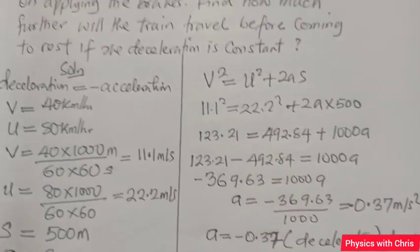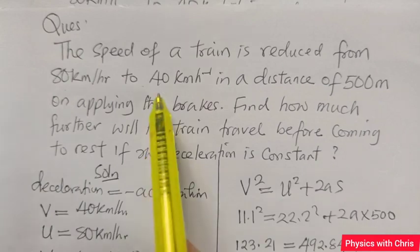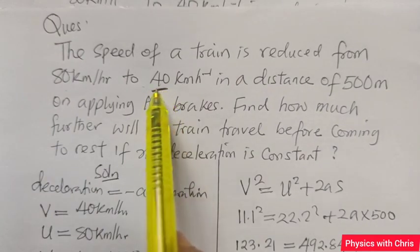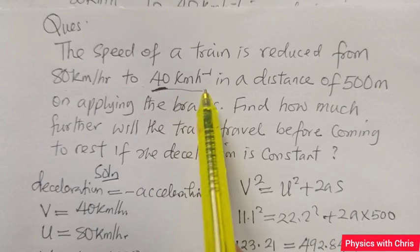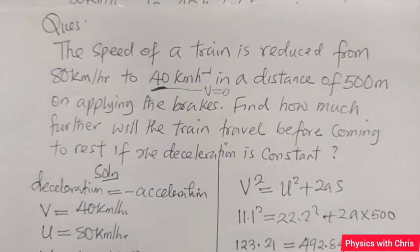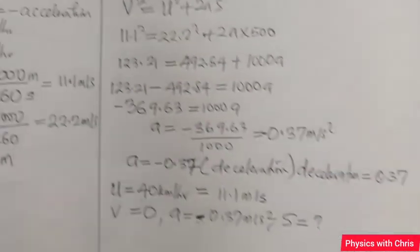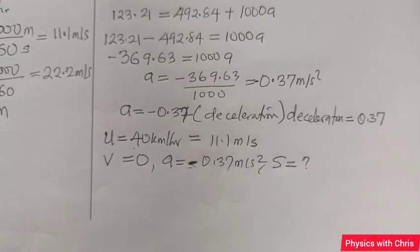These 500 meters given is the distance traveled by the train in the course of the speed reducing from 80 to 40. Now suppose the speed is to reduce further from 40 to 0, what extra distance will they cover? That's exactly what the question wants to find. We need to calculate the distance.